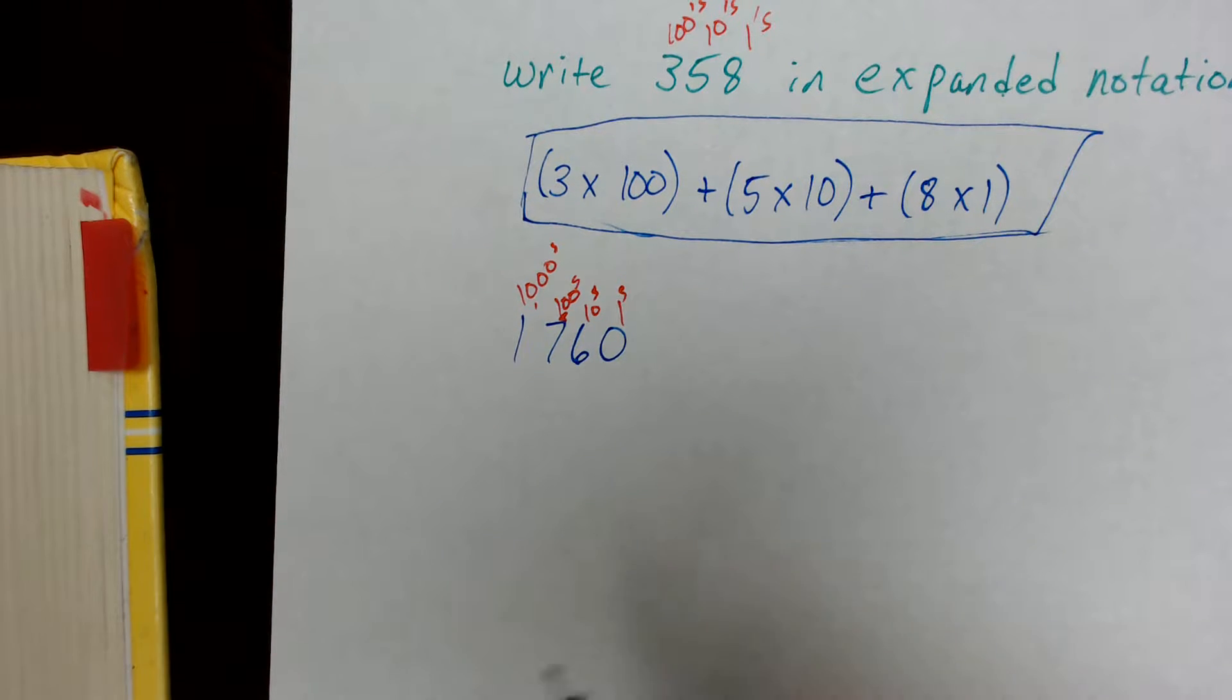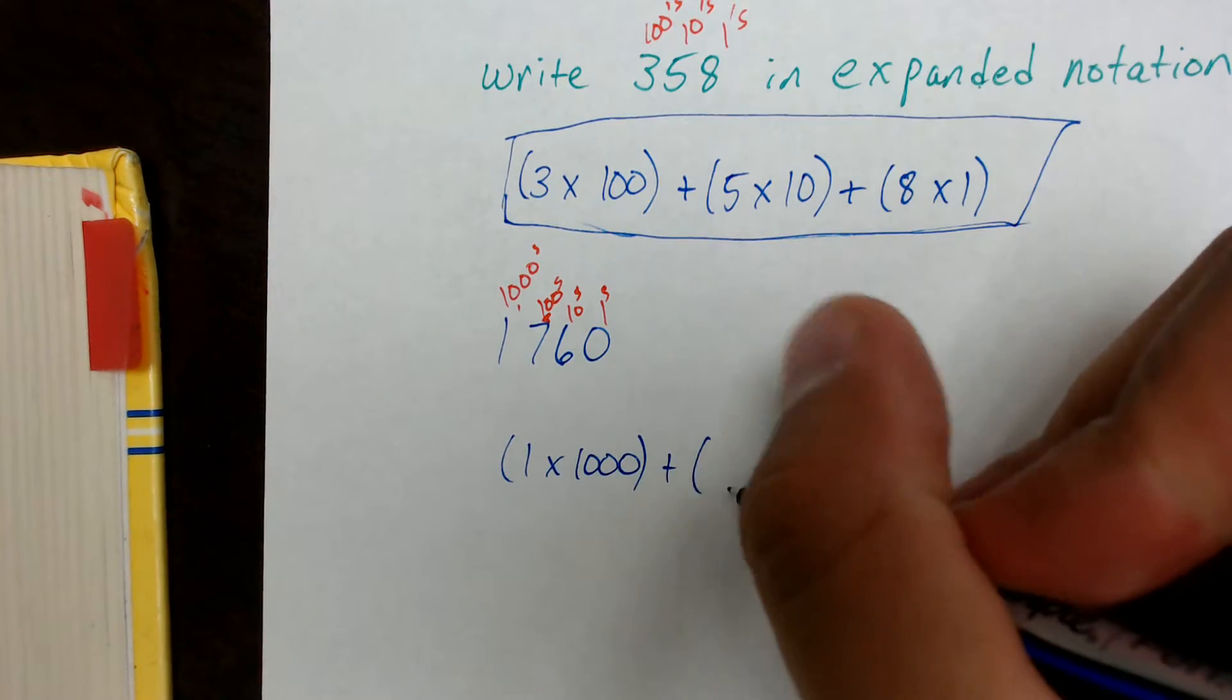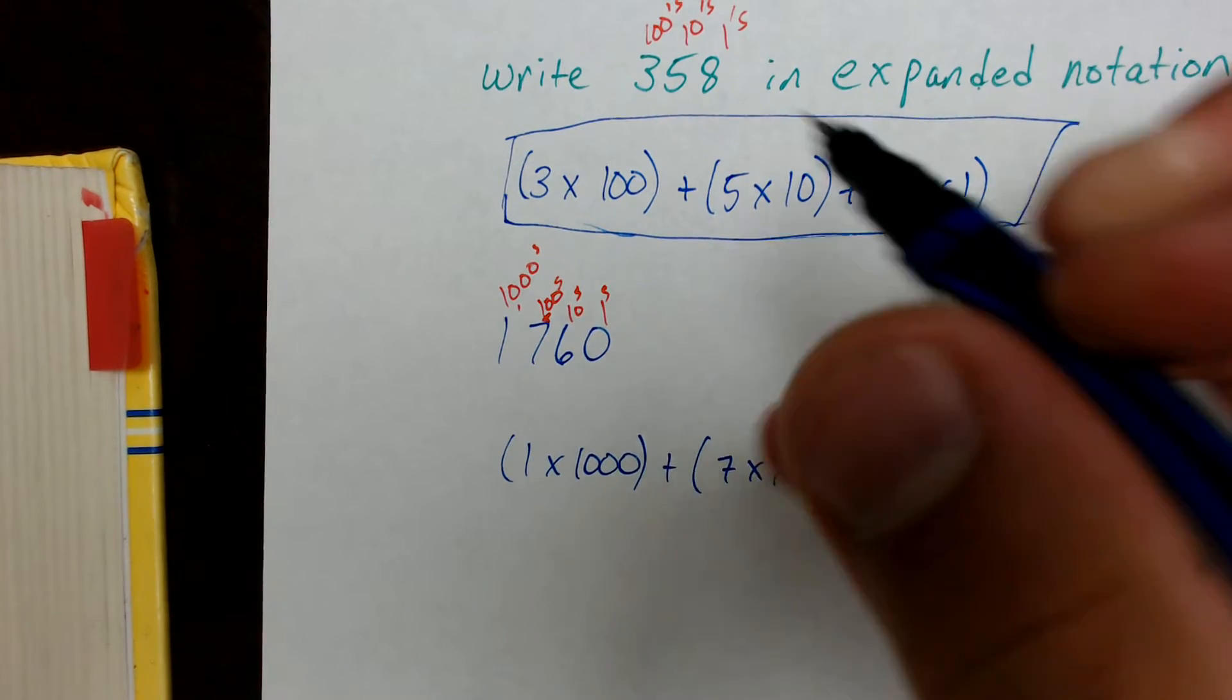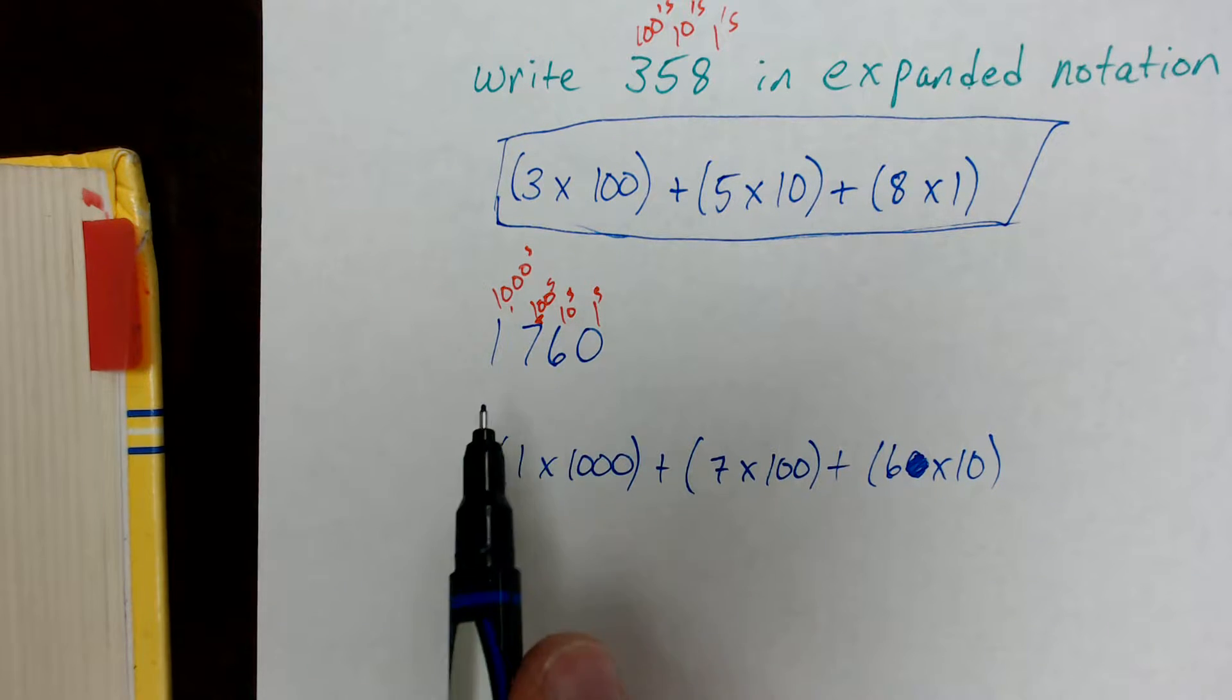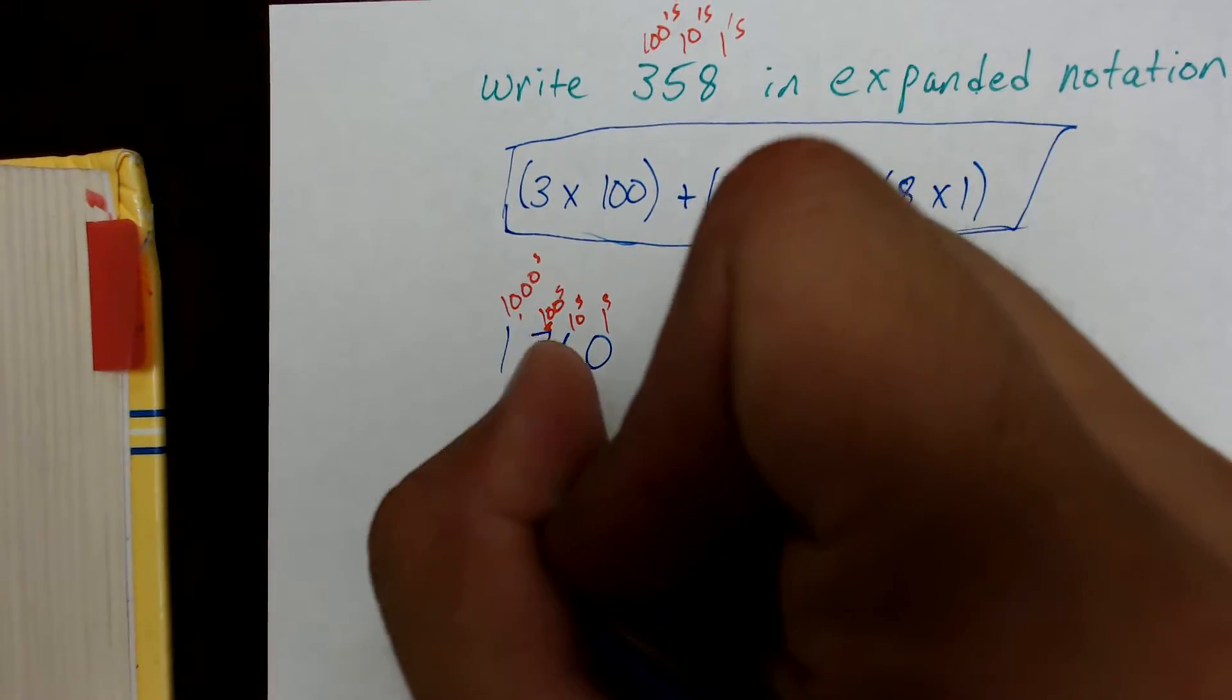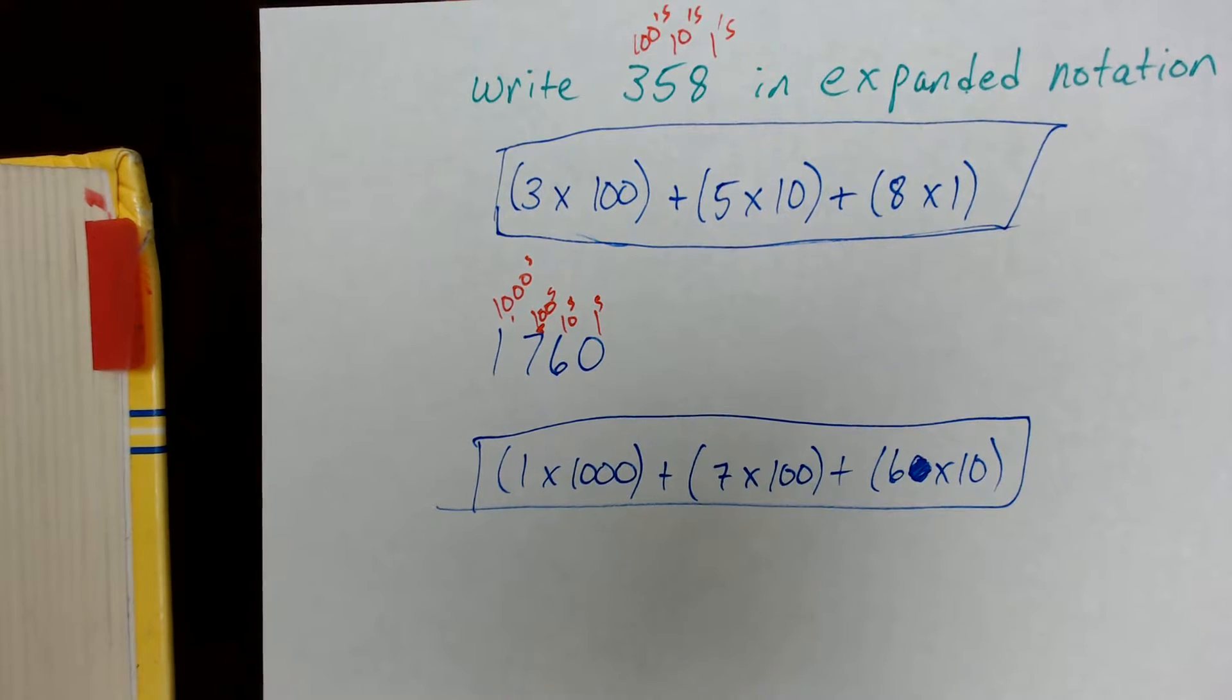So again, I'm going to start with my first number, the 1, inside of parentheses. 1 times its place value of 1,000. Then I'm going to add that to the next place value, 7 times the value of 100 for 700. 6 times the value of 10. And then what we notice here is the ones value has a zero. So any place value that you see that has a zero, you don't have to write it. You can just skip it. So this would be my final answer: 1 times 1,000 plus 7 times 100 plus 6 times 10. 1,760.